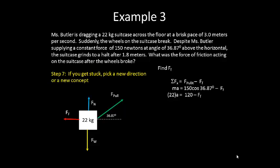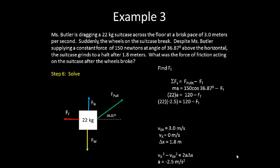So we either need to consider a new direction or a new concept. In this particular case, they've given us that the suitcase grinds to a halt after 1.8 meters. This might make us think about kinematic equations. We know that the velocity in the x direction was three meters per second, the initial velocity. We know that it's going to come to a halt. So the final velocity is zero and the displacement is 1.8 meters. This allows us to solve for the acceleration. Now that we know the acceleration, we can plug it back into our force equation up above and solve for the force of friction, 175 newtons.